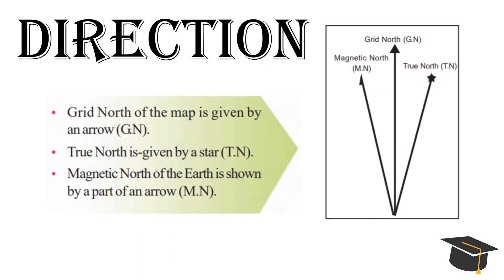Direction is useful to find the location of a particular place. When we talk about direction, we can identify three types of north on a map. Grid north is represented through a triangular arrowhead while true north is represented with a star. The magnetic north of the earth is shown by a part of an arrow.